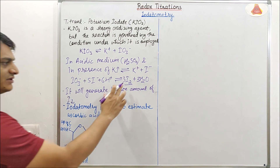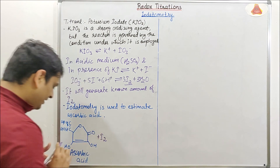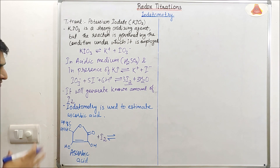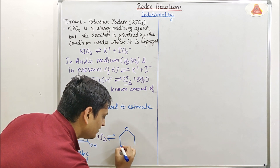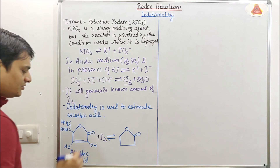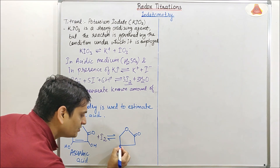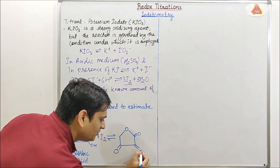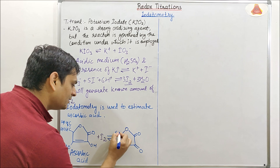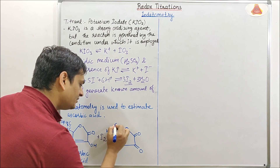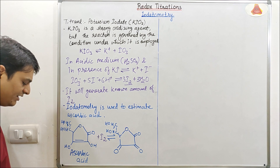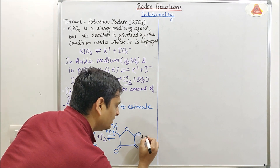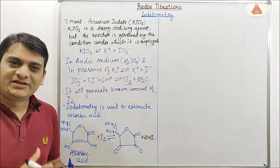This ascorbic acid will react with the liberated iodine and be converted into dehydroascorbic acid. The structure of dehydroascorbic acid again contains a 5-membered ring, but here the two OH groups lose their hydrogens and form two C=O double bonds. The CHOH and CH2OH groups remain the same. From the ascorbic acid we get 2 hydrogen atoms, and from the reaction we get 2 iodine atoms, which combine to form 2HI.